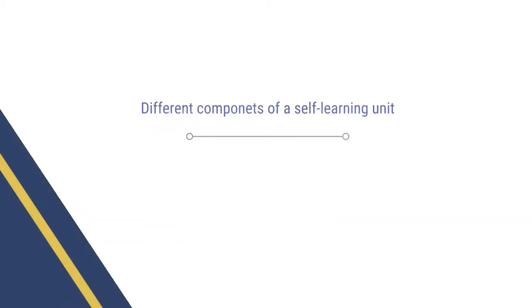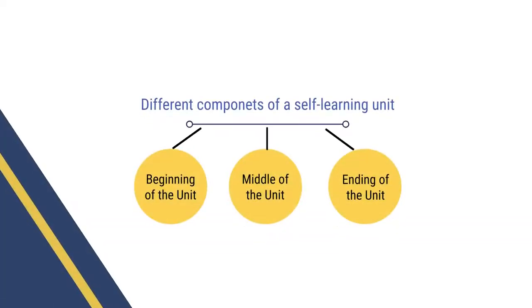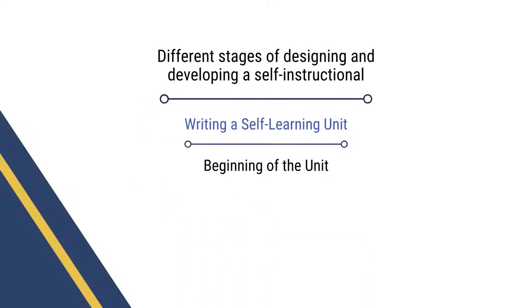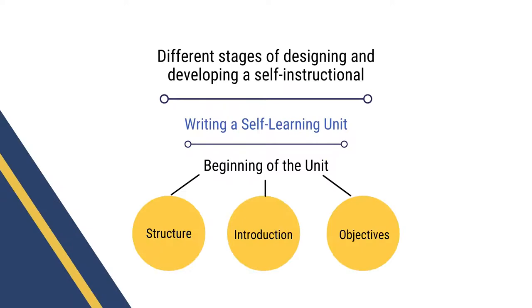Now, let us discuss what are the different components of a Self-Learning unit. First of all, we have the beginning of the unit, then we have the middle of the unit, then we have the ending of the unit. In the beginning of the unit, we have three components: the first one is the structure, the second one is the introduction, and the third one is the set of objectives.